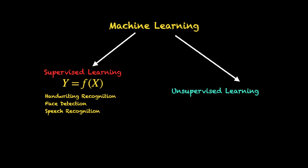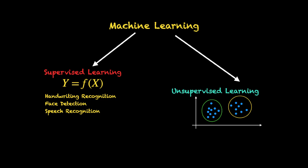Then we have unsupervised learning, where you do not have the output data points — you only have the input data points. For example, in this graph you can see points plotted on a 2D plane, and the objective of unsupervised learning is to find hidden patterns in these data points or to do classification without having an explicit set of output data points. In this figure, the given data points can be classified into two different categories, shown by a green circle and a yellow circle on the screen.